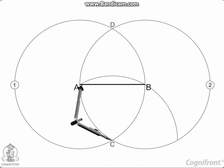Next, draw an arc with center as C and radius as AB. The arc cuts the circle 1 and circle 2 at E and F respectively.